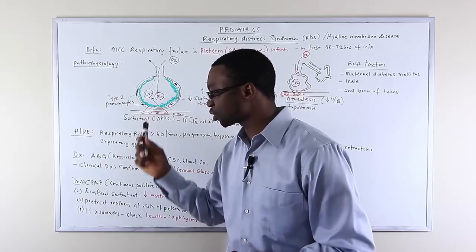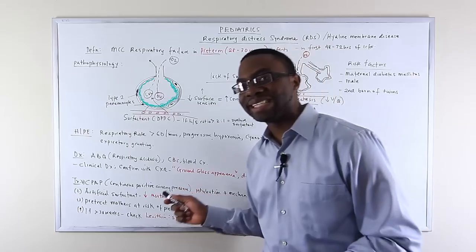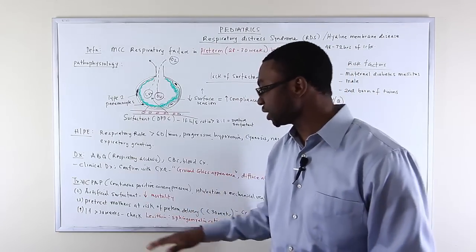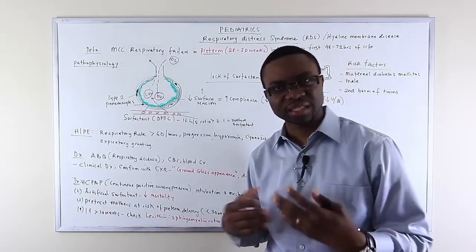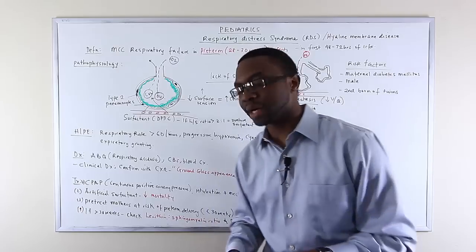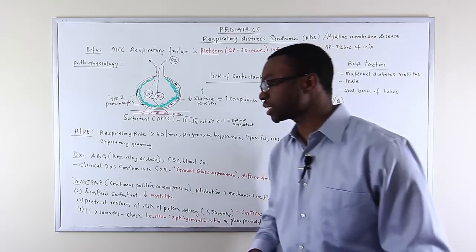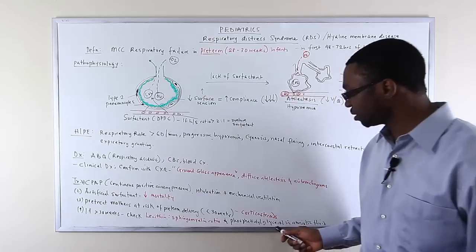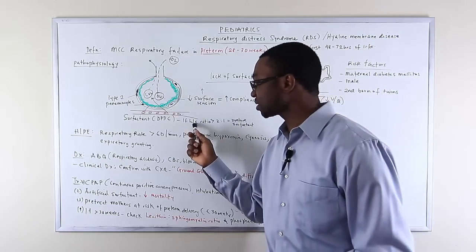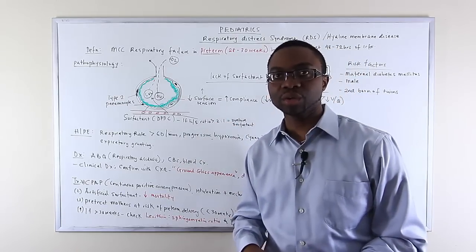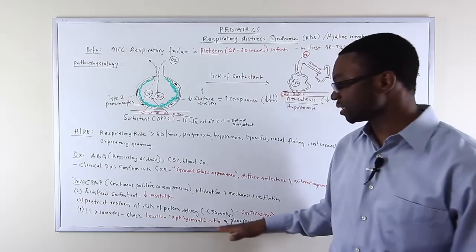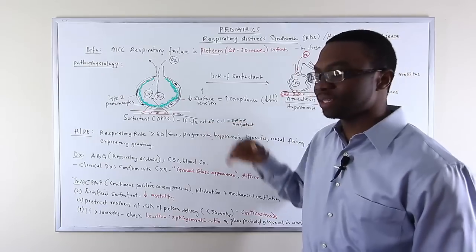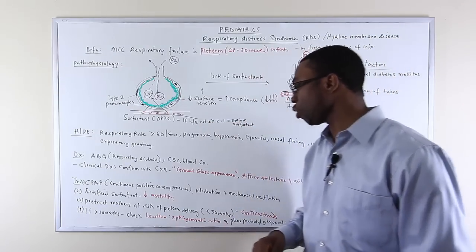Remember this child has no surfactant. You have to give them artificial surfactant because this decreases mortality. If the mother already has an increased risk of developing a preterm delivery, you want to pre-treat these mothers. If they're less than 30 weeks, we treat with corticosteroids. If they are greater than 30 weeks, you want to check the lecithin to sphingomyelin ratio and phosphatidylglycerol in the amniotic fluid. If that LS ratio is less than 2 to 1, you have to treat that mother with glucocorticoids. Very, very high yield.